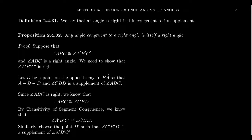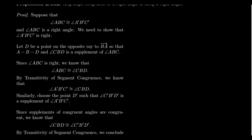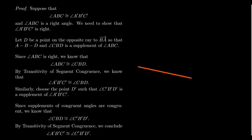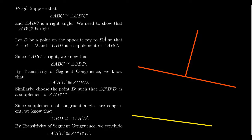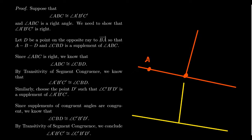Let me scroll down to put a diagram on the screen. We have one angle in red, and then another angle. We have points A, B, and C for the first angle, and A prime, B prime, C prime for the second. We're going to assume that these angles are congruent to each other.